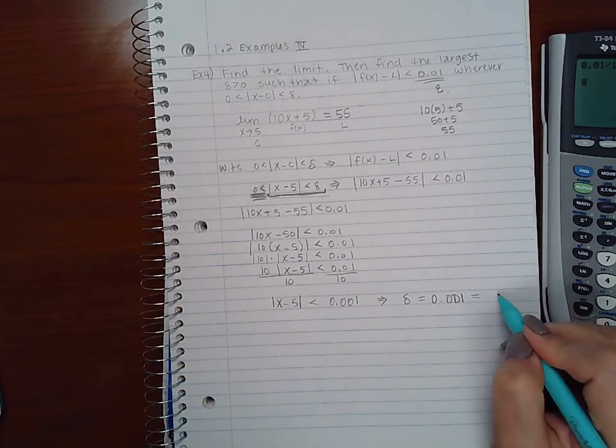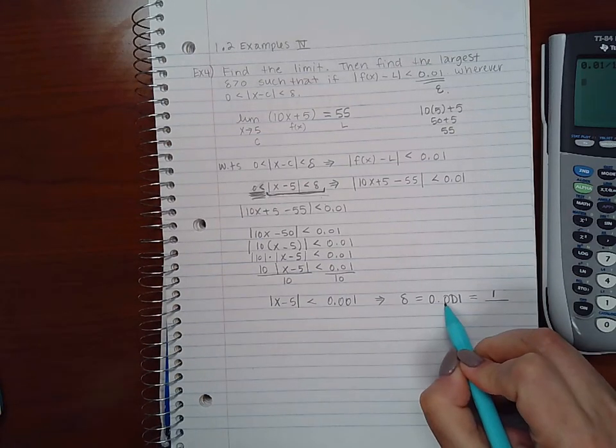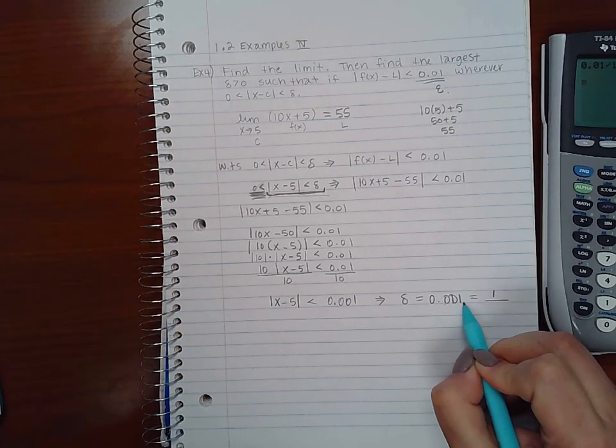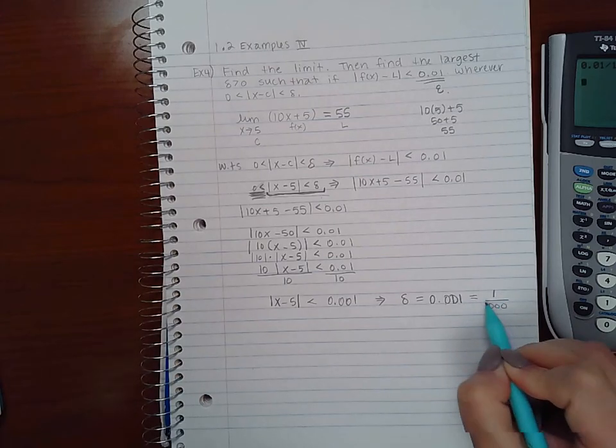Or if you write it as a fraction, this is the tenths, the hundredths, the thousandths. So this is 1 over 1000.